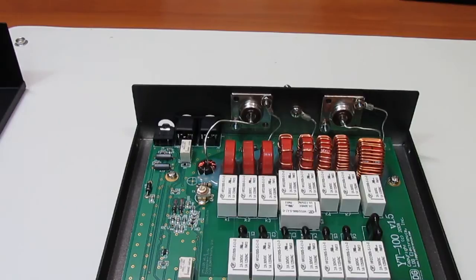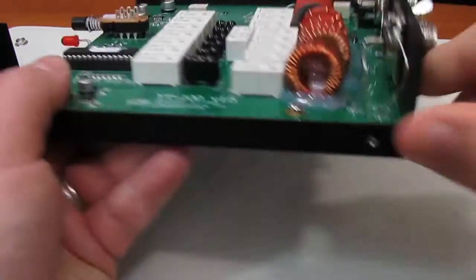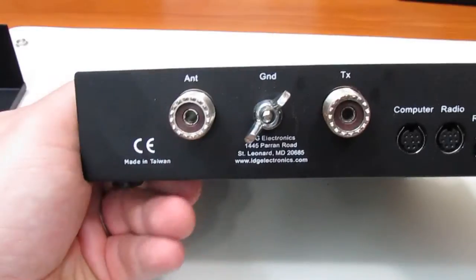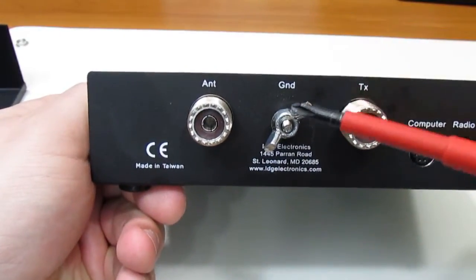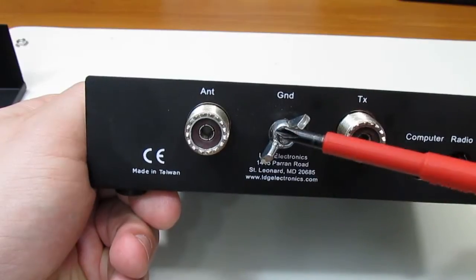Just to compare what a good ground connection should or rather could look like, I opened up this LDG YT-100. It's an automatic antenna tuner intended for use with the Yaesu FT-857. It works with other radios as well.